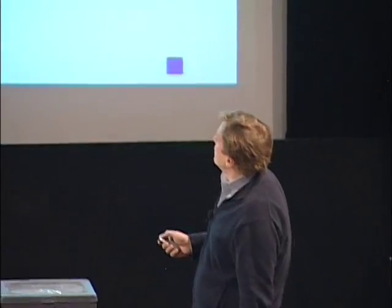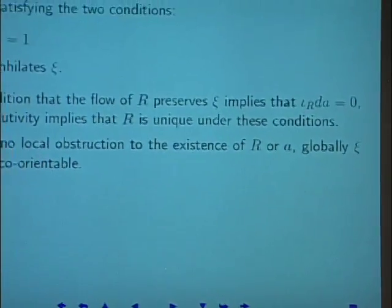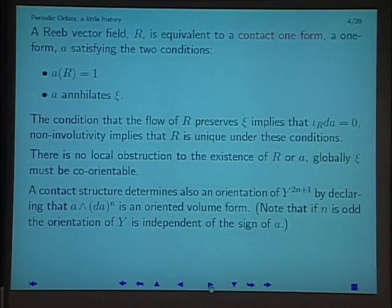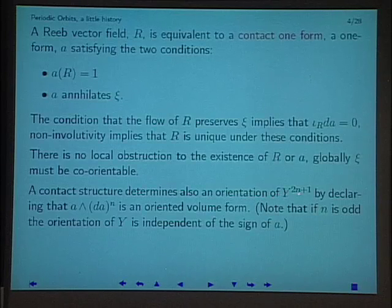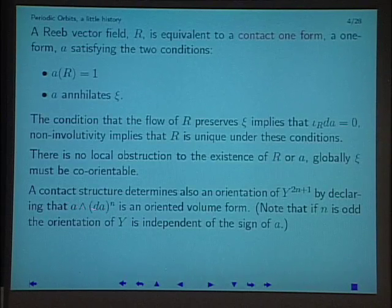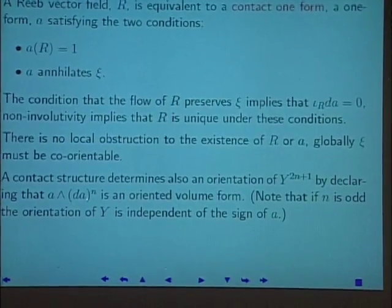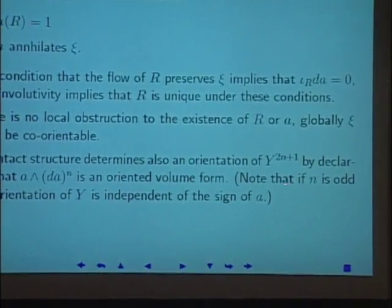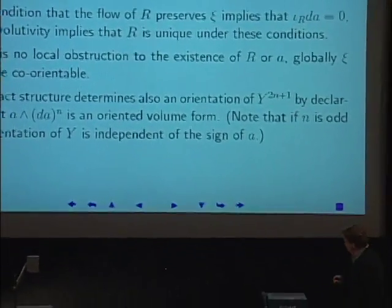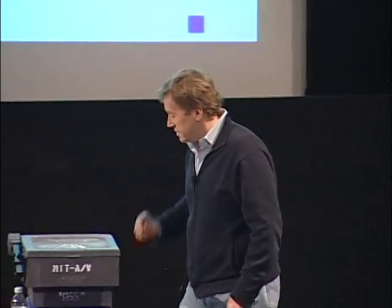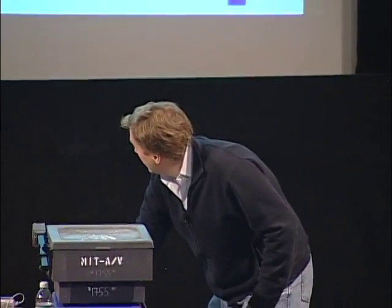Given the distribution, there's no local obstruction to existence of a vector field or one-form. Globally, xi must be co-orientable. A contact one-form determines an orientation: the non-integrability is equivalent to this being a nowhere-vanishing (2n+1)-form on the (2n+1)-manifold, giving a preferred volume form. We're mainly interested in the three-dimensional case, where a contact one-form determines an orientation.